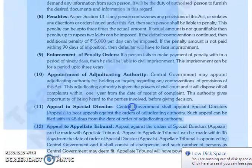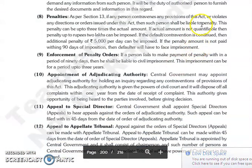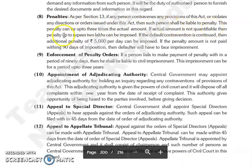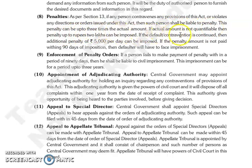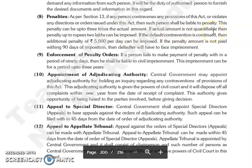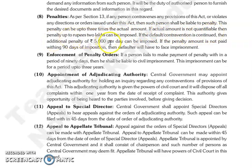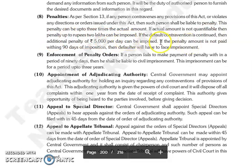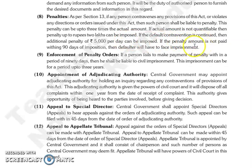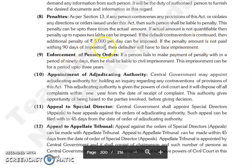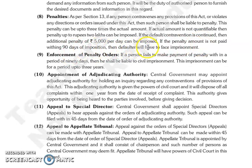As per Section 13, अगर कोई person contravene करता है कोई भी provision इस act का, या violate करता है कोई भी direction या order जो इस act के अंदर issue किये गए हैं, तो वो person liable होगा penalty के लिए. और ये penalty हो सकती है up to three times actual amount का. अगर जो actual amount है वो quantifiable नहीं है, तो जो penalty है वो up to rupees 2 lakh impose की जा सकती है. और अगर default continued रहता है, तो additional penalty 5,000 rupees per day impose की जा सकती है.